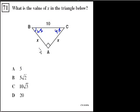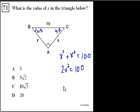What does the Pythagorean theorem tell us? It tells us that this side squared, x squared, plus this side squared, plus x squared, is equal to the hypotenuse squared, equal to 10 squared which is 100. So we get 2x squared equals 100. x squared equals 50, dividing both sides by 2.